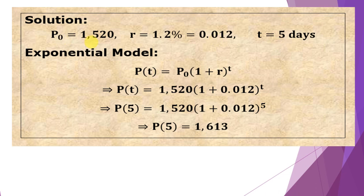For our exponential model, we have P(t) = P₀(1 + r)ᵗ. So P(t) = 1,520(1 + 0.012)ᵗ. In this case, our t = 5, so we have to get P(5) = 1,520(1.012)⁵.